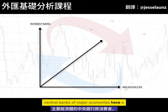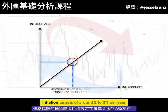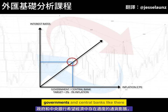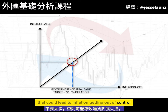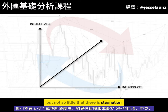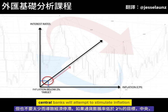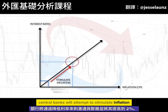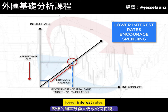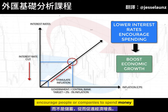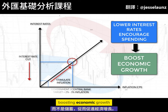Central banks of major economies have a Consumer Prices Index inflation target of around 2-3% per year. Governments and central banks like there to be just enough inflation in an economy — not too much that could lead to inflation getting out of control, but not so little that there is stagnation. If inflation is below the 2% target, central banks will attempt to stimulate inflation and get it to 2% by cutting interest rates. Lower interest rates encourage people or companies to spend money rather than save, boosting economic growth.